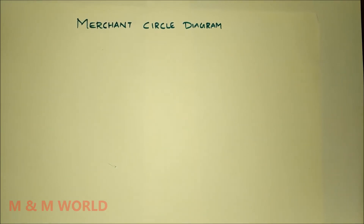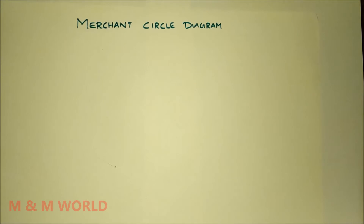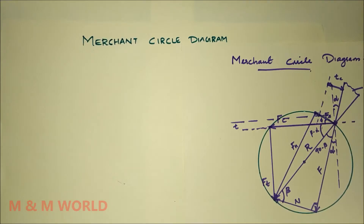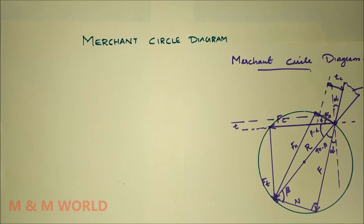Hello everyone. In this video we will study about the relationship of various forces acting on the chip with the horizontal and vertical cutting force from the Merchant circle diagram. In my last video we had studied about the Merchant circle diagram. So in order to derive the relationship of various forces acting on the chip, we have to study the frictional force system and shear force system.